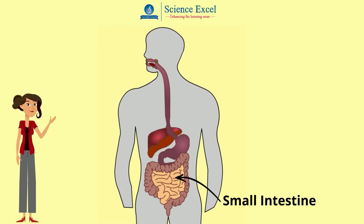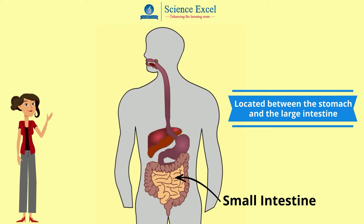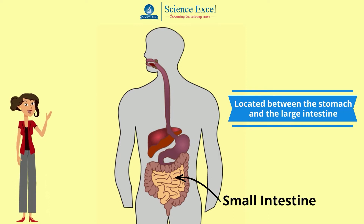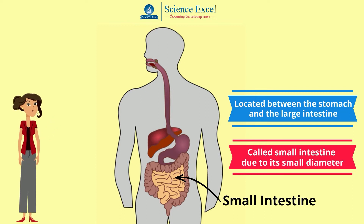The small intestine is the part of the alimentary canal between the stomach and the large intestine which aids in both digestion and absorption. It is a hollow, highly coiled tube of about 7 meters long and 2.5 centimeters wide, folded in the abdomen. It is called the small intestine because its diameter is very small — so it is the diameter, not the length, which gives it this name.